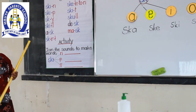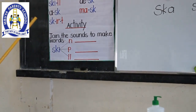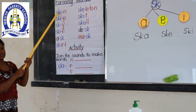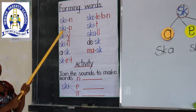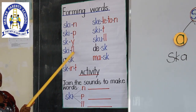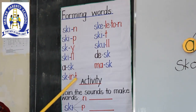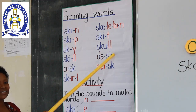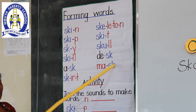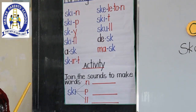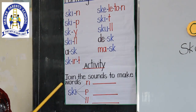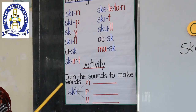Now, after blending or joining these words, we are going to read together. You are going to repeat after me: skin, skip, sky, skill, ask, skirt, desk, mask. After reading those words, I am now going to give you an activity. This is the activity which we are going to do.